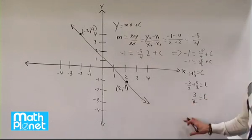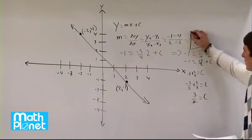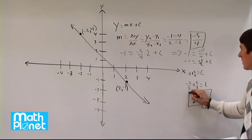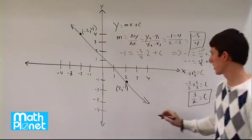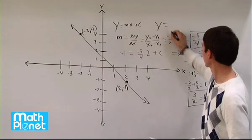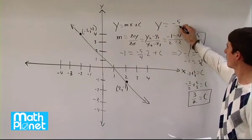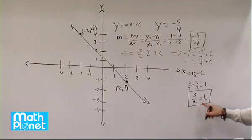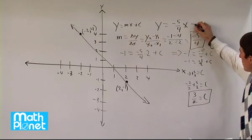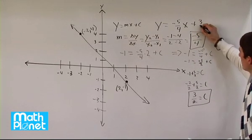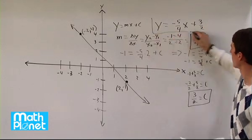So now we've found our two different variables, our slope and our y-intercept. We can write this all out together. So let's just write y equals slope negative five-fourths times x plus three-halves. So that's our final answer there.